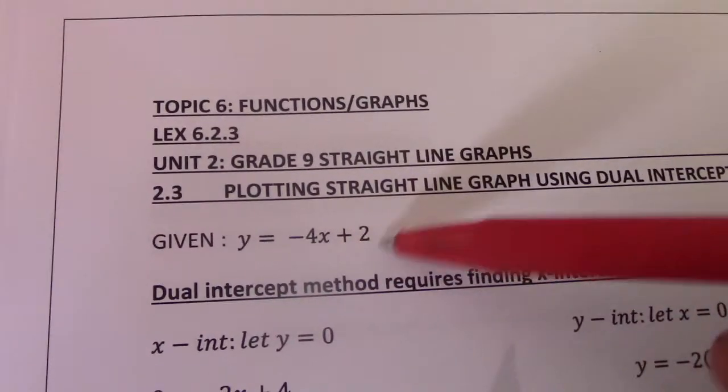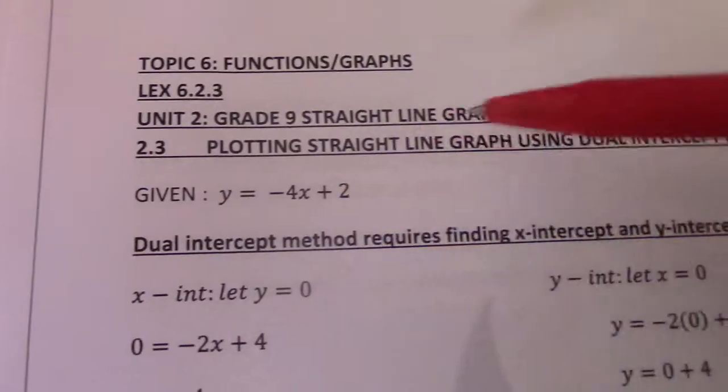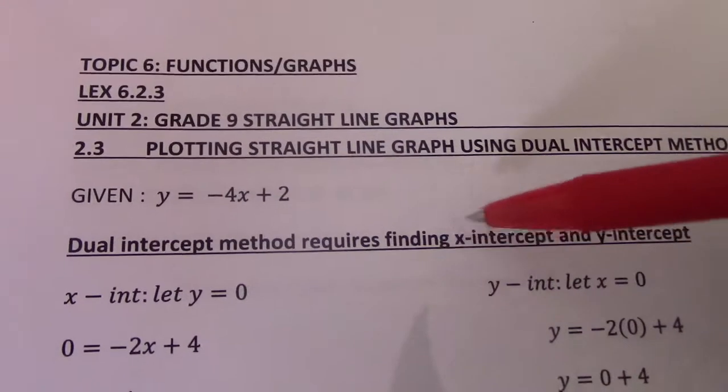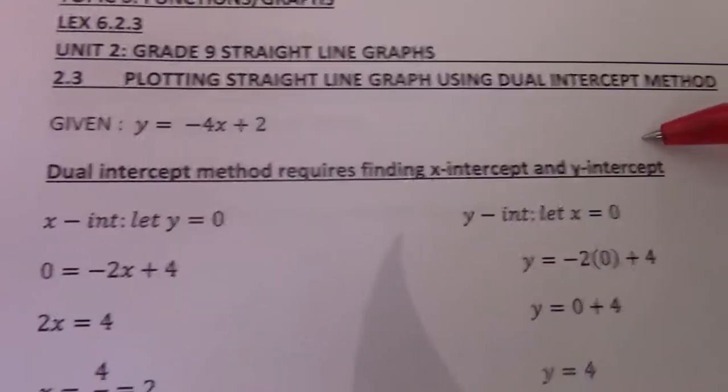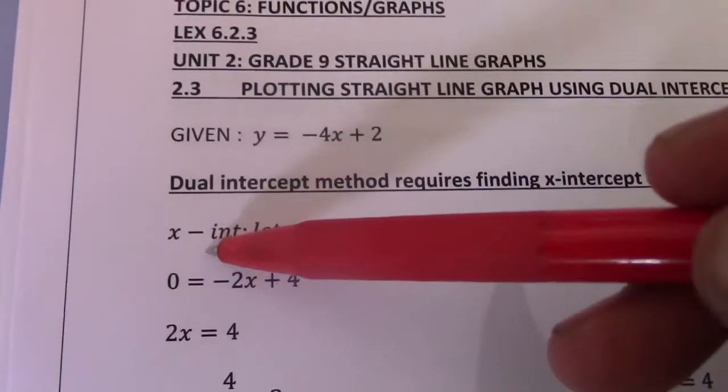So given y equals negative 4x plus 2, according to dual intercept method we are required to find number 1, x intercepts, number 2, y intercepts.